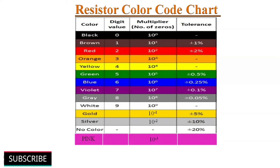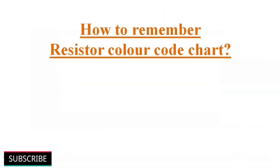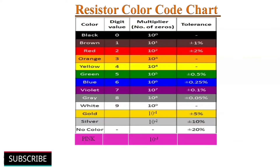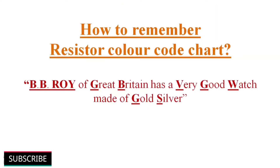Let's discuss this with some examples so that we may know how to use this chart to find out the resistance value of a resistor. Before discussing examples, the question arises: how do we remember this resistor color code chart? It's very difficult to remember all the colors and their respective values, but we can remember them easily by using the following mnemonic.